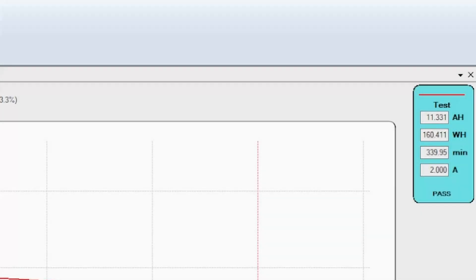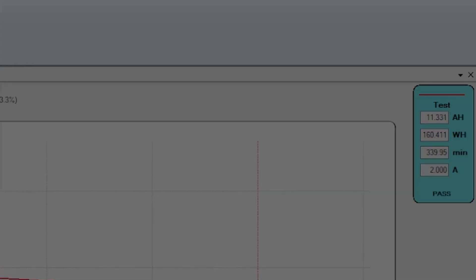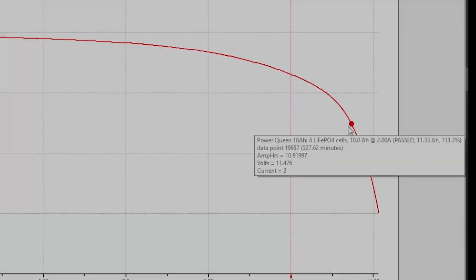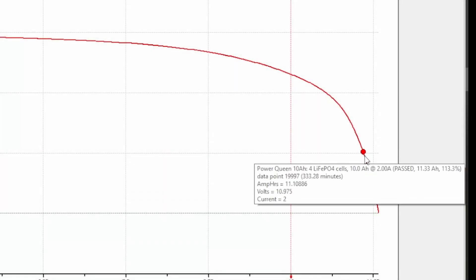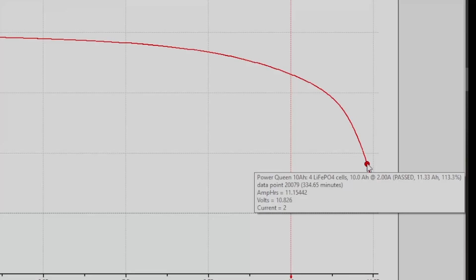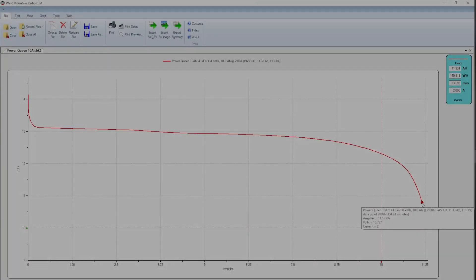All right guys, as you can see the test passed. We ended up with 11.33 amp hours, really good for a 10 amp hour battery. Here's what I like to call the helix factor: 10.8 volts on this battery, so well beyond its rated capacity. I'm getting pretty excited about this one.